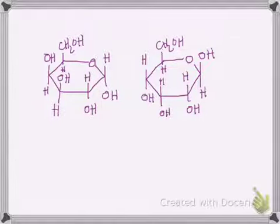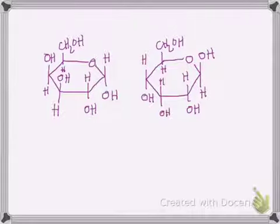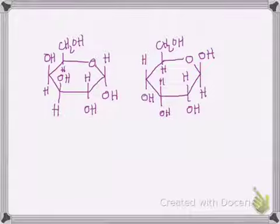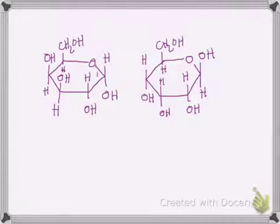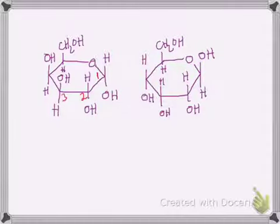The first thing we're going to do is number each of these sugars, because we're going to be using those numbers in the naming. The anomeric carbon gets the lowest number possible. This is the anomeric carbon — that's carbon one. Then two, three, four, five, six.